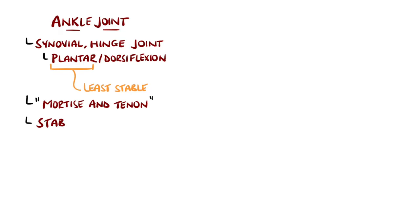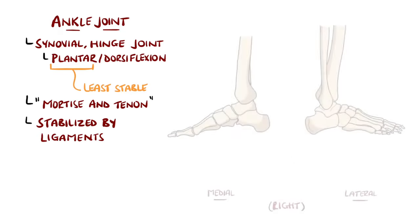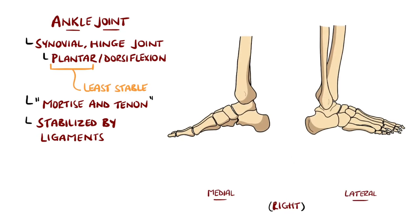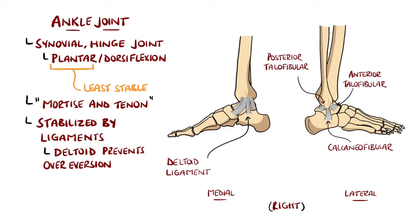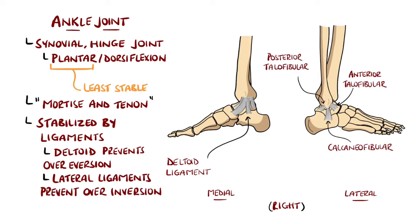Ligaments help to provide more stabilisation. The medial or deltoid ligament branches into four ligaments and is mostly involved in preventing over-eversion, while the lateral ligament comes from the lateral malleolus and is made up of three ligaments with the main function of preventing over-inversion of the foot.